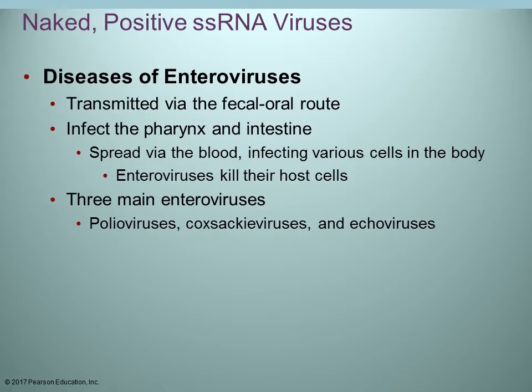Enteroviruses are usually transmitted by the fecal-oral route. The infection usually involves the intestines and can infect the pharynx. If it gets into the blood, it can spread to other areas of the body. There are three main enteroviruses: the polioviruses, coxsackieviruses, and echoviruses.